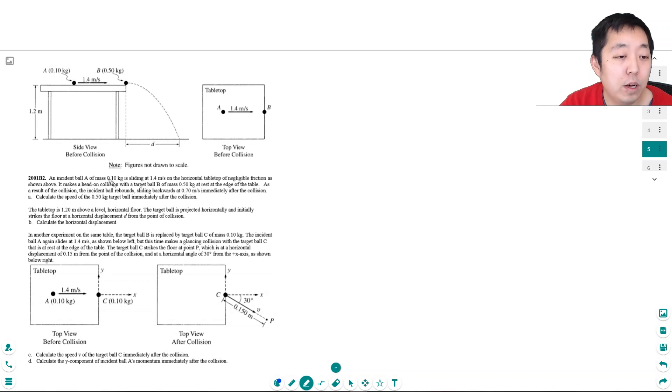An incident ball A of mass 0.1 kilograms is sliding at 1.4 meters per second on a horizontal tabletop of negligible friction. It makes a head-on collision with target ball B of mass 0.5 kilograms at rest at the edge of the table. As a result of the collision, the incident ball rebounds, sliding backwards at 0.7 meters per second.